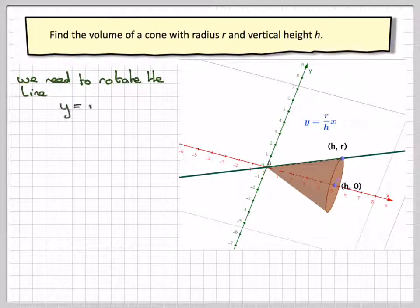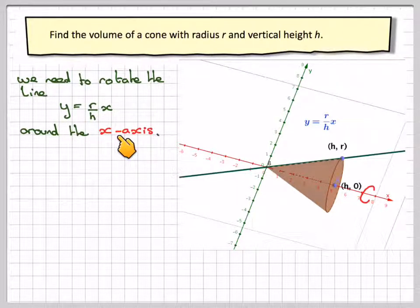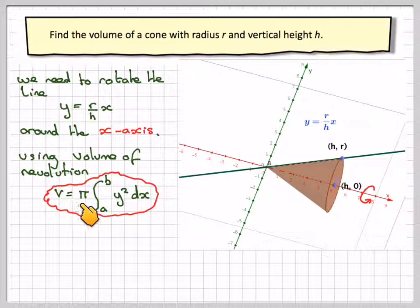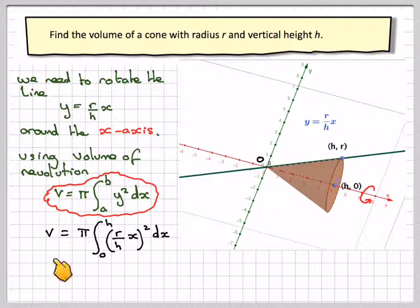So we need to rotate the line y equals r over h x around the x-axis using the volume of revolution. So the formula for the volume of revolution is volume equals pi integral between a and b of y squared dx. So using this line here, the volume is going to be pi integral from 0 to h of r over h x all squared dx.